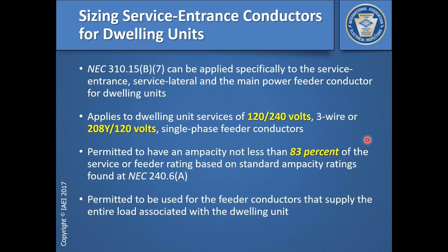If you went to table 310.15(B)(16) and looked at 2 AWG or 3 AWG copper, even in the 90-degree column, it would tell you that a 2 AWG copper conductor is only good for 195 amperes.